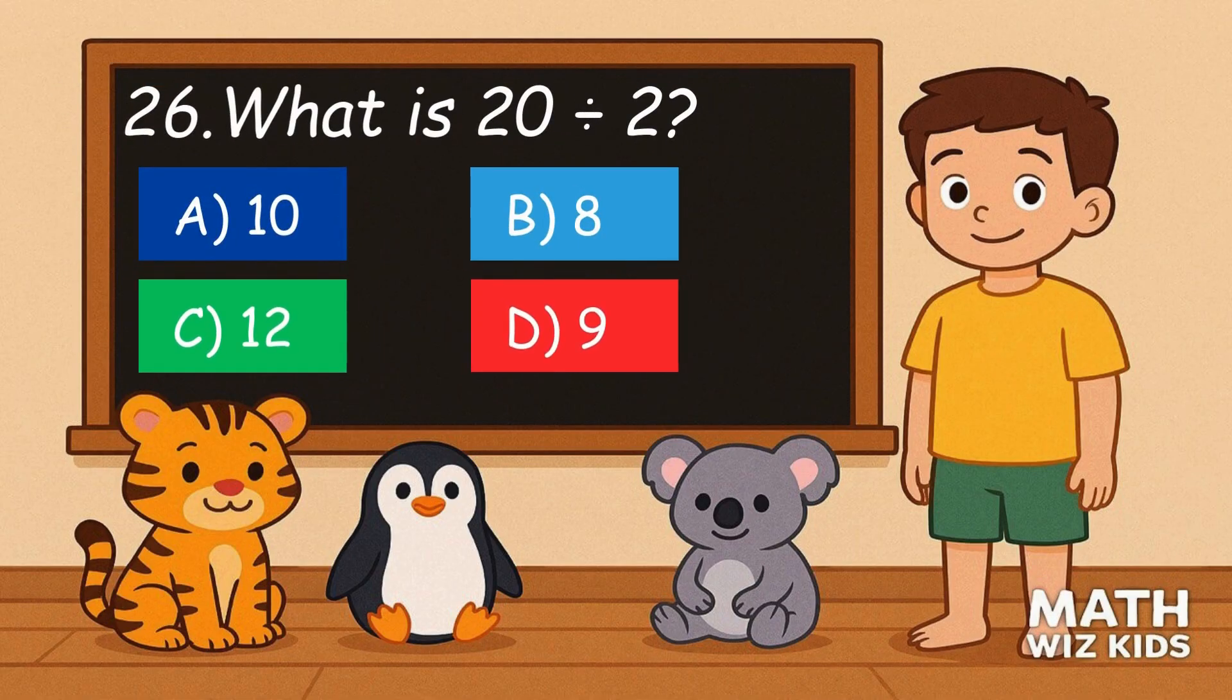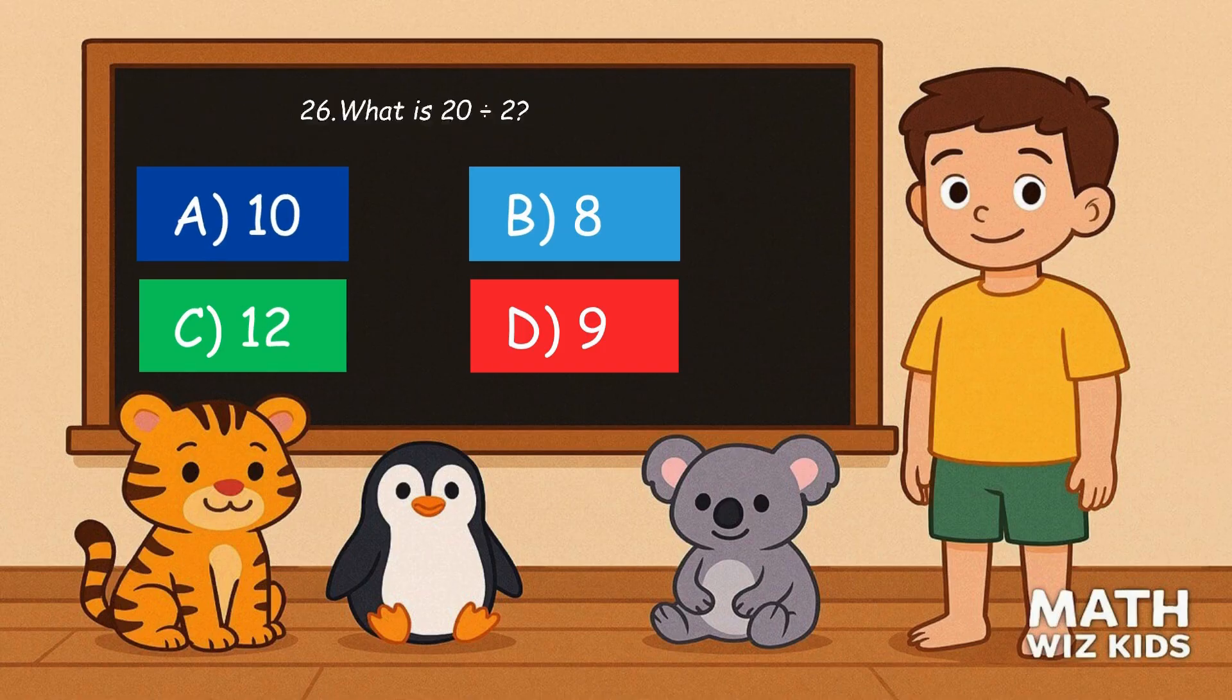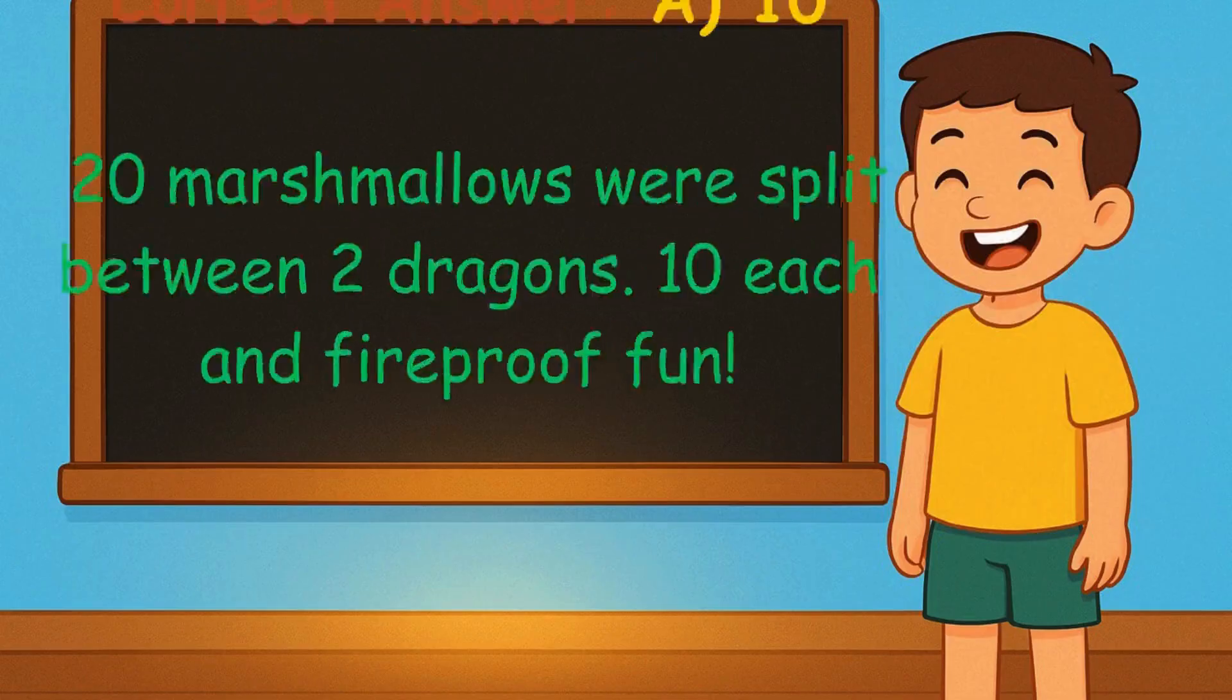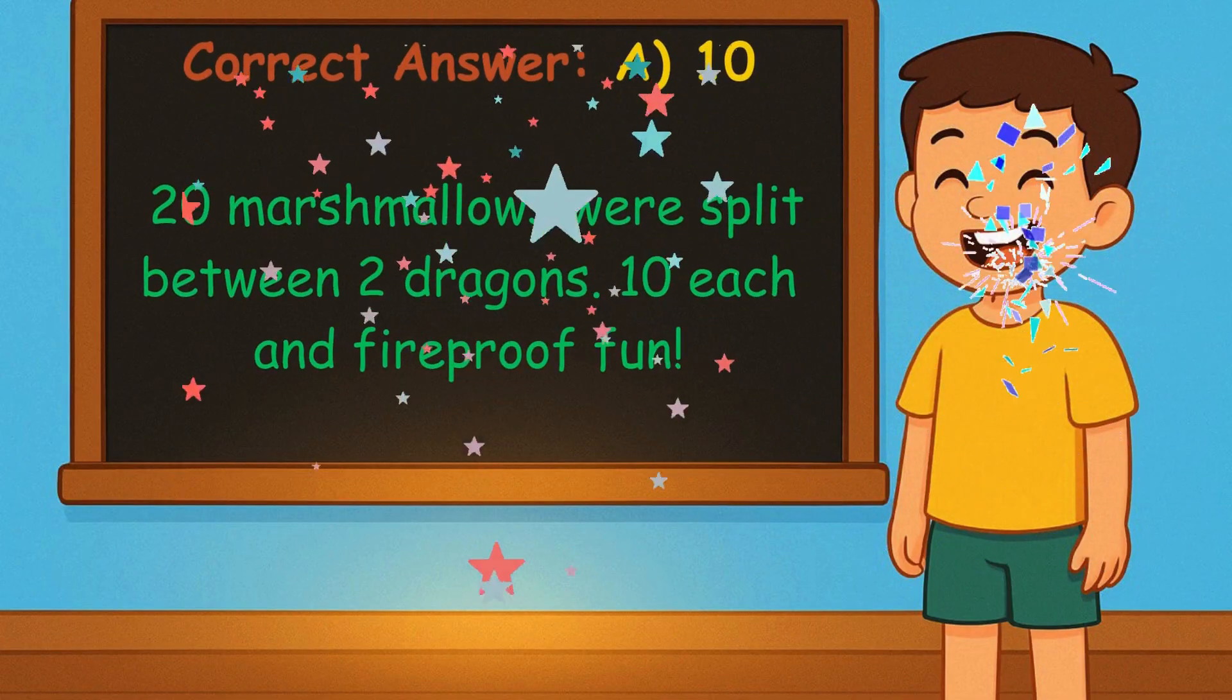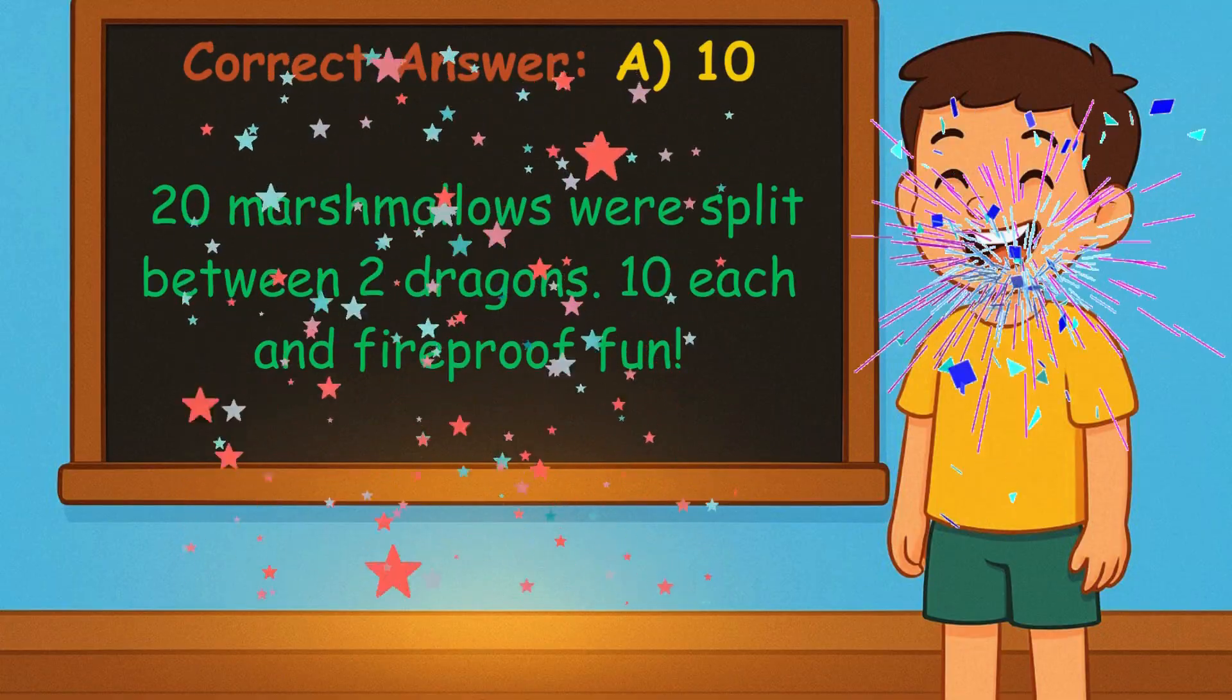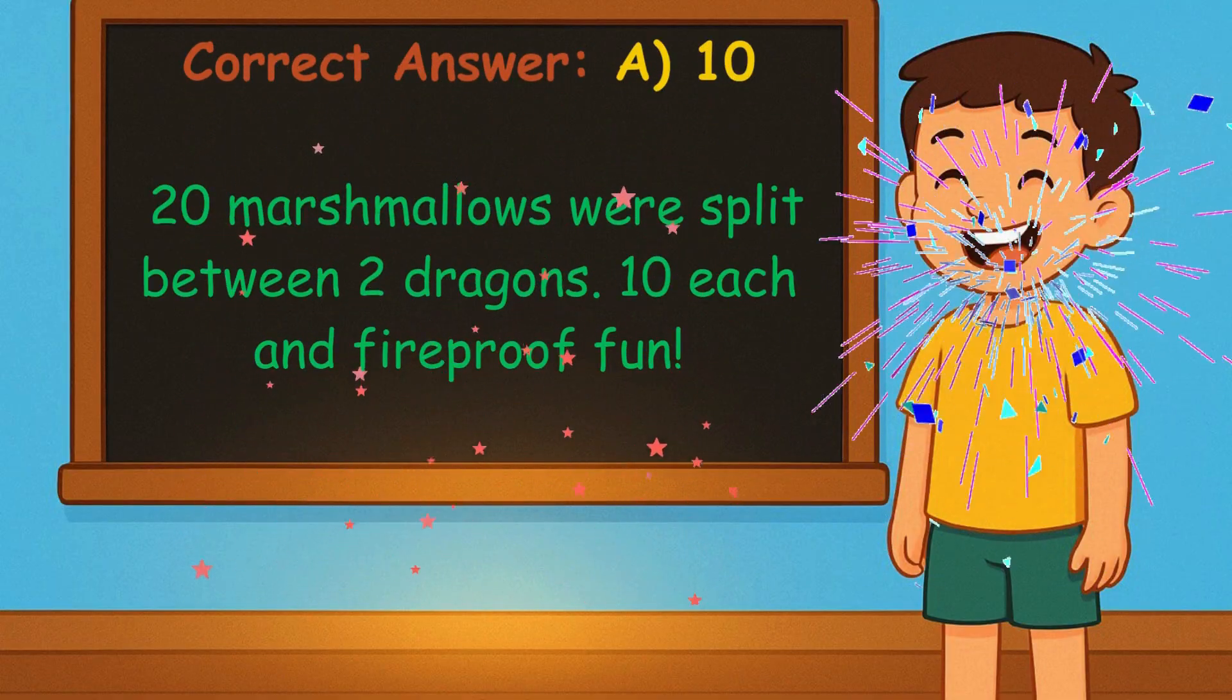26. What is 20 divided by 2? Is it A, 10, B, 8, C, 12, or D, 9? Correct answer is 10. 20 marshmallows were split between 2 dragons. 10 each and fireproof fun.